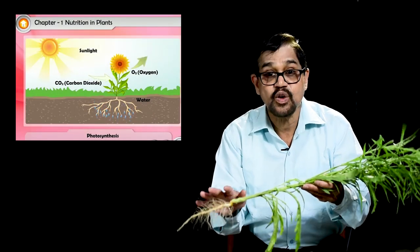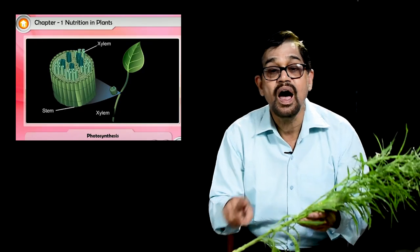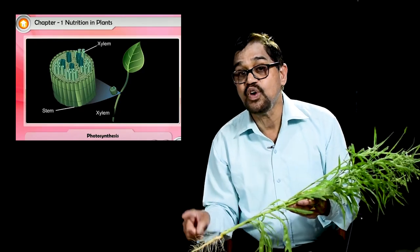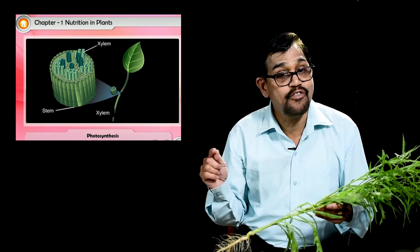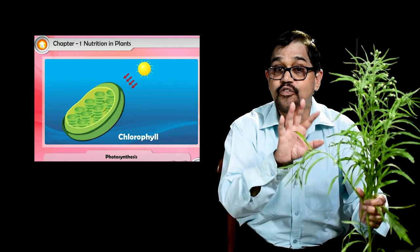That is what happens in the roots — water molecules move into the plant by the process of osmosis. In the plant, we have two types of vessels that conduct water and food. The vessels that conduct water are called xylem, and those that conduct food are called phloem.